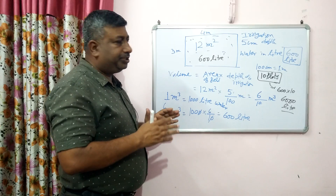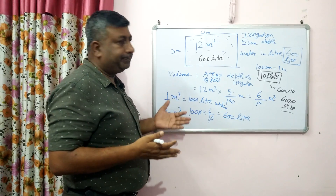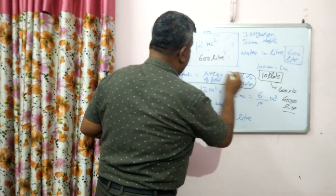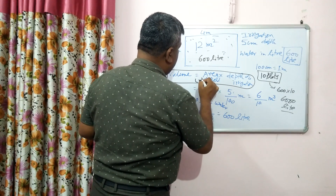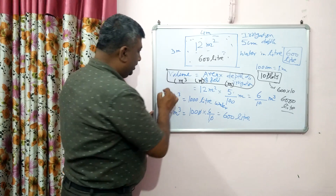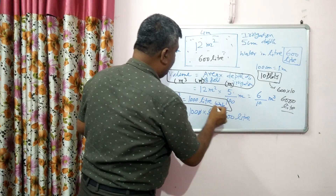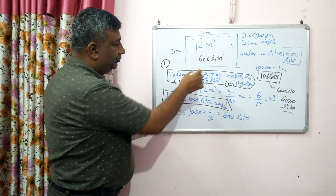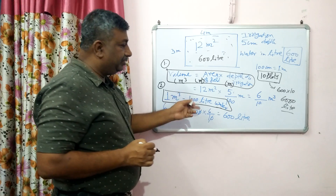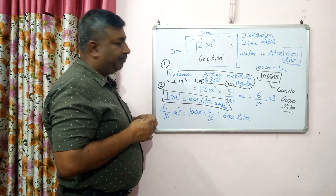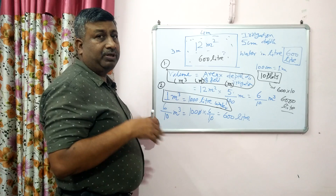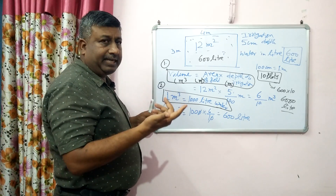This is the simple calculation through which we can calculate the amount of water in liter. Similarly, for a large area we can calculate — the basis is: volume equals area of the field in square meter multiplied by depth of irrigation in meter, giving volume in cubic meter. The second relationship is 1 cubic meter equals 1000 liter. With these two formulas we can calculate the volume of water, whether depth is given in millimeter or centimeter.